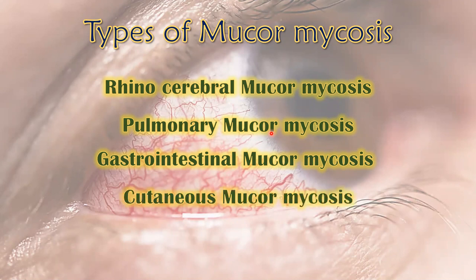The fourth important type is cutaneous mucormycosis, which occurs when Mucor enters through skin cuts or wounds. To cause cutaneous mucormycosis, the fungus does not require an immunocompromised or weak immune system — it can infect a healthy human by entering the host body through cuts or wounds.